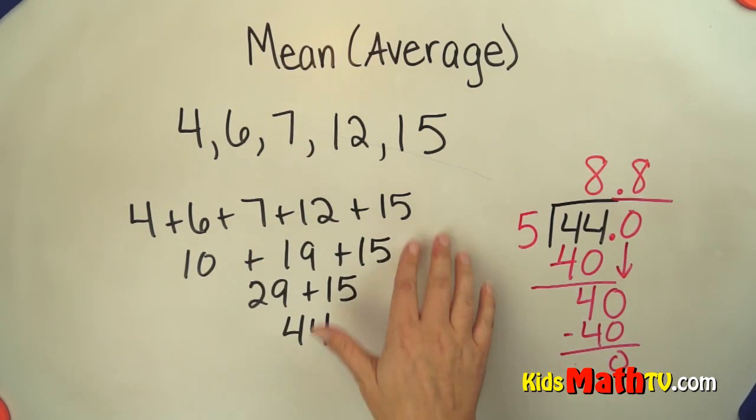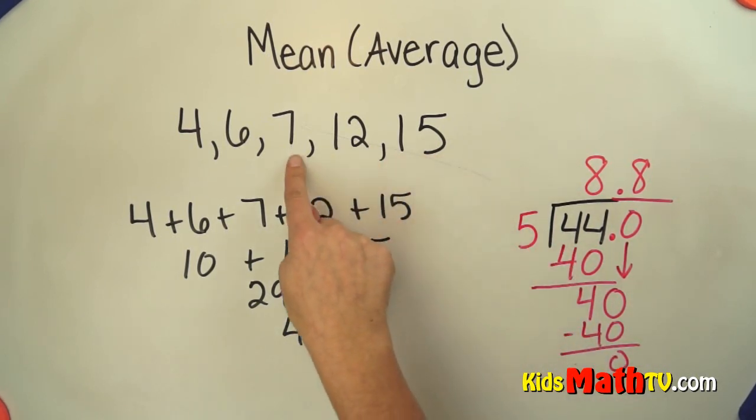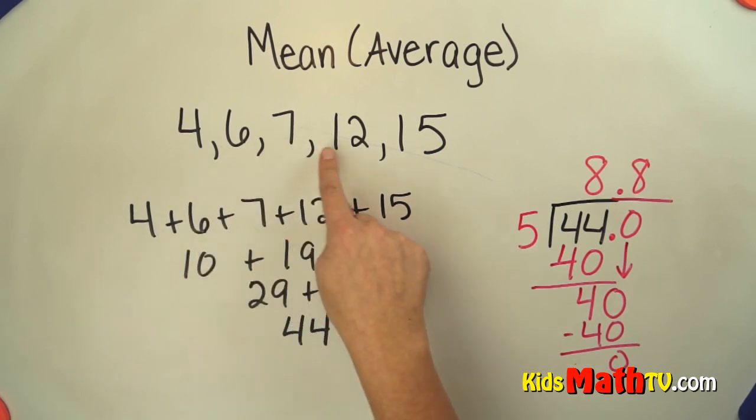So to find the average, or to find the mean, you add up the numbers, you find a total, then you divide that total by the number of items in the set, 1, 2, 3, 4, 5, and divide by 5. You get 8 and 8 tenths. That's the end of our lesson on finding the mean.